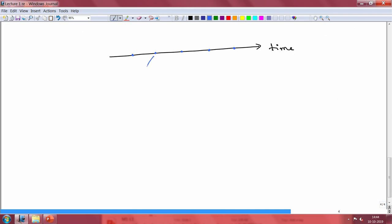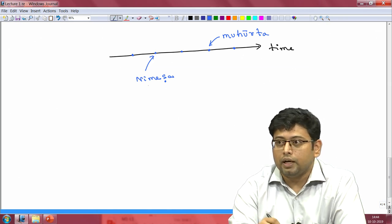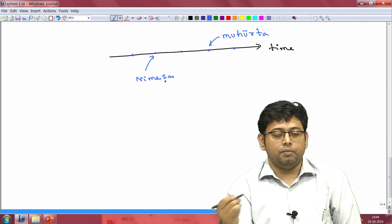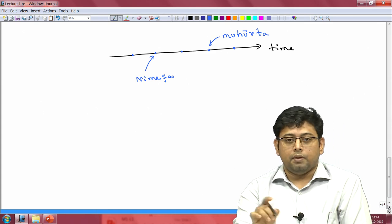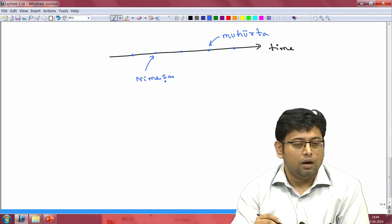One such unit of time is called the nimesha. Another one was muhurta. A nimesha was defined as the time it takes for blinking of an eye. This built up different time scales on this one unit that they identified, and using multiplicating factors they built up different time scales.